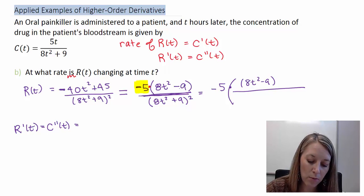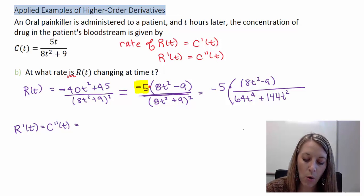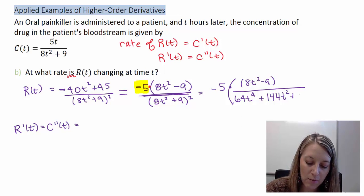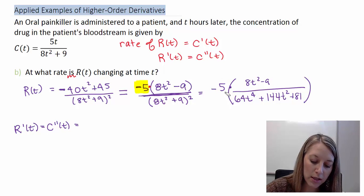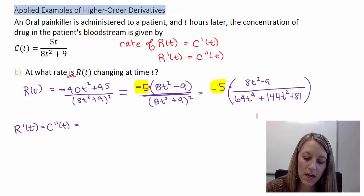If I were to FOIL my denominator, 8t² times 8t² in my first would give me 64t⁴. Outside would give me a 72t². Inside would give me the same, so together that gave me a 144t². And then last, my 9 times 9 would give me an 81. And so now I can think about it in this format as well, where I have my constant on the outside so I don't have to worry about taking the derivative of it, and then my expanded format on the inside.